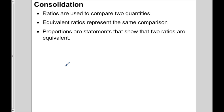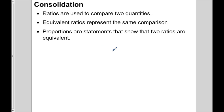To sum things up: ratios are used to compare two quantities — in this video, height to base of a skateboard ramp. Equivalent ratios represent the same comparison. Proportions are statements that show two ratios are equivalent, and that's something you'll need to be able to solve — you can watch that in another video on solving proportions. I hope you have a good understanding of how to write ratios and proportions. Thanks for watching, and best of luck.